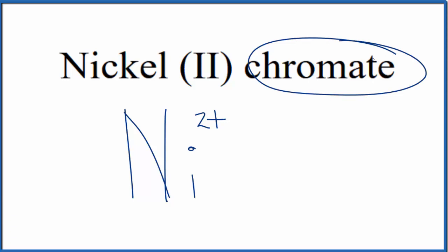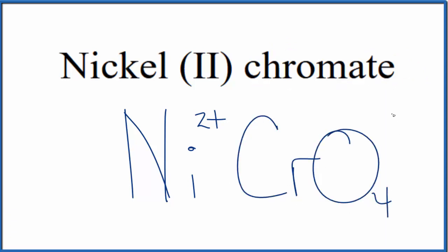For the chromate, you won't find that on the periodic table. It ends in -ate. This is a polyatomic ion. So you either memorize that the chromate ion is CrO4 and the whole thing has a charge of 2-, or if you're allowed, you look it up on a table of polyatomic ions.